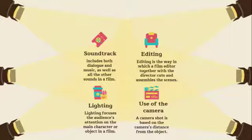D: Editing — editing is the way in which a film editor, together with the director, cuts and assembles the scenes. The way the scenes are joined together creates the rhythm of the motion picture. Scenes can be long and drawn out, or short and choppy.